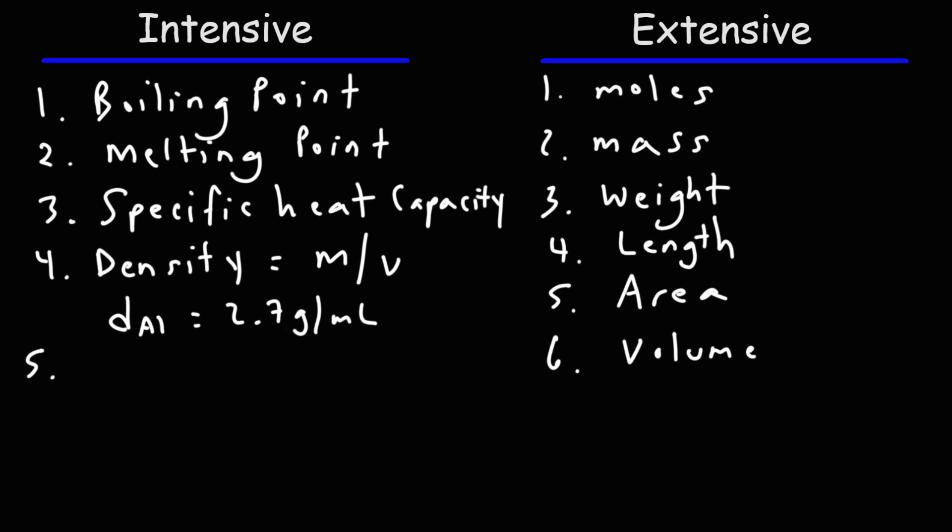Here are some other intensive properties. Conductivity is an intensive property — metals are known to conduct electricity, so if you have a substance that conducts electricity, you're likely dealing with a metal. Some non-metals like graphite can also conduct electricity, but for the most part it's probably going to be a metal. There are different forms of conductivity: electrical conductivity and thermal conductivity. Metals can conduct heat, and the same is true for diamond — diamond is an excellent conductor of heat, so it has a high thermal conductivity value.